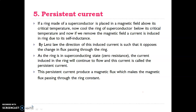In that superconductor material, at normal temperature — that is, above critical temperature — it is placed in a magnetic field. So the temperature is above the critical temperature, meaning we assume the superconductor is not yet in the superconducting state. We are now cooling the ring of superconductor below its critical temperature.